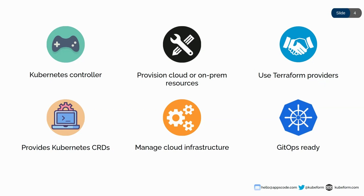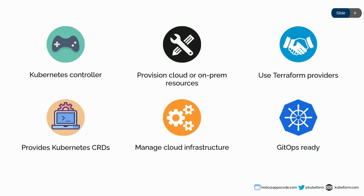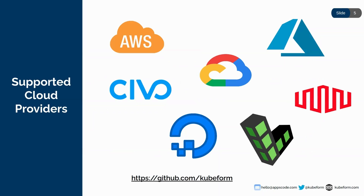QForm is fully GitOps-ready, meaning you can store your custom resources in a Git repo and use a CI/CD pipeline like GitHub Actions to automate the infrastructure management portion. Currently QForm supports almost more than 25 cloud providers, covering almost all top cloud providers — AWS, Google Cloud, Azure, DigitalOcean, Linode, Equinix Metal, Civo, and many more. You can visit our GitHub organization at github.com/qform to see all the cloud providers QForm currently supports.